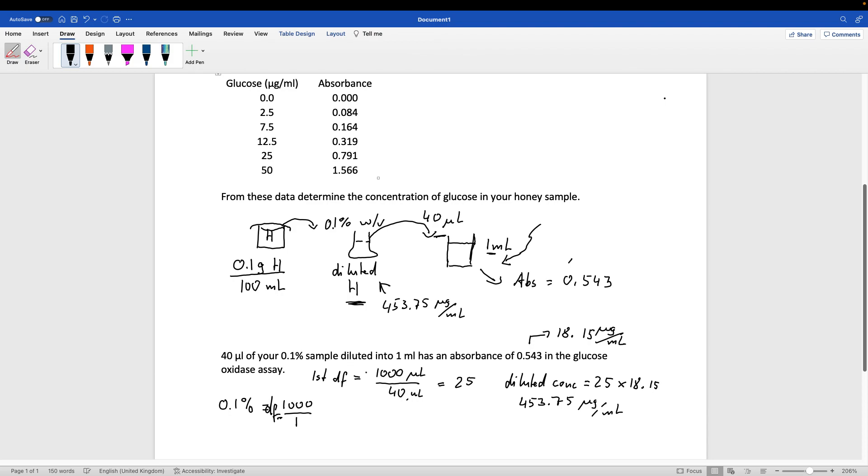And that gives us 0.1%. So what we need to do is we need to multiply our concentration of the glucose in the diluted honey just simply by 1,000. So for the undiluted honey, we would get...